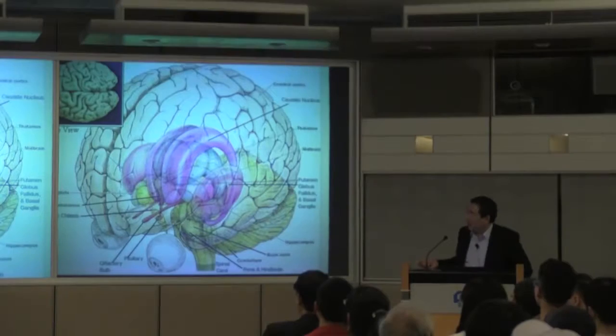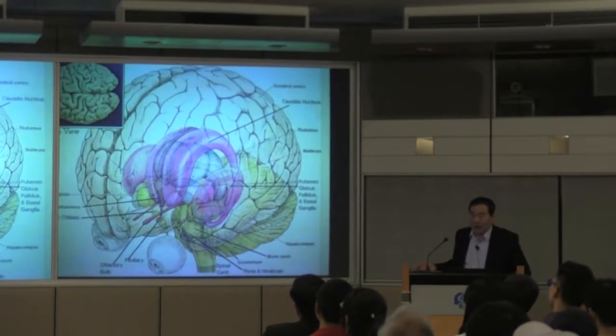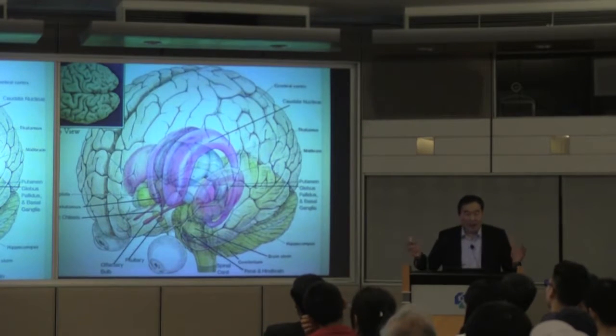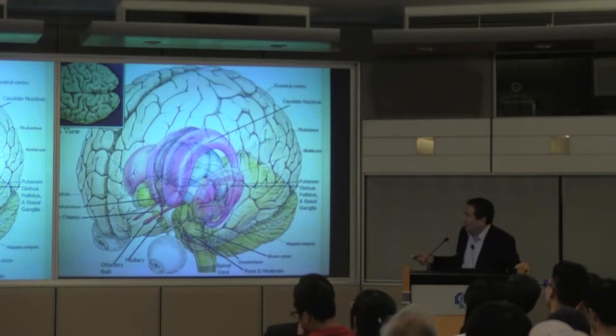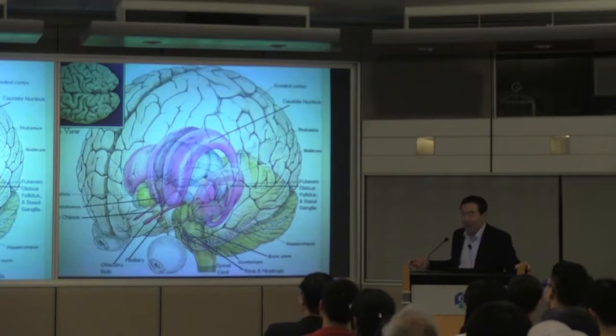I would like to begin by saying that this most complicated structure in the universe makes it very complicated, but the most important part is this cortex that is surrounding the structure underneath. This is the entire structure of the brain. The human brain is one and a half kilograms. Perhaps half of its weight is in the cortex, in humans.